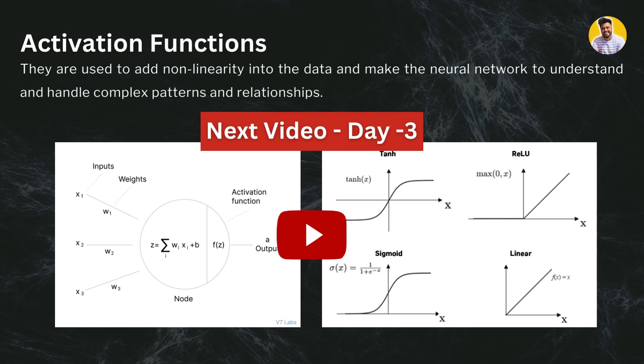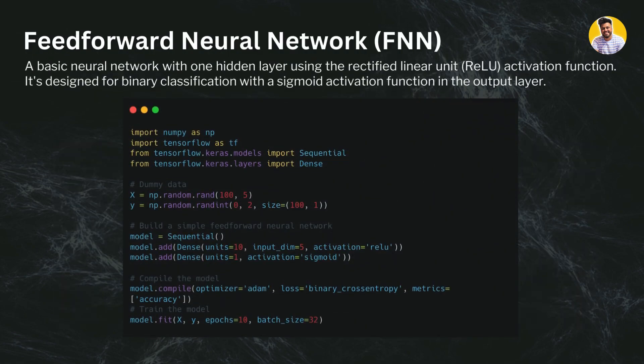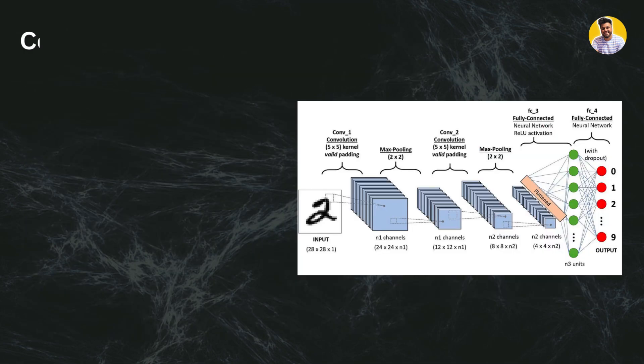Here is the Python code for the feed forward neural network. It is a binary classification problem that uses the ReLU activation function and the sigmoid activation function in the output layer. This is how you can build a small neural network using TensorFlow. In our project videos, each of these neural networks will also be explained with full end-to-end projects.